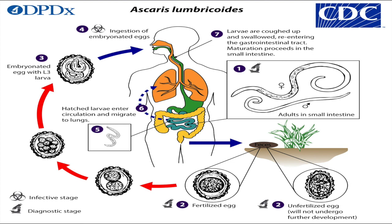This is the life cycle of Ascaris lumbricoides. Ascaris lumbricoides differs between sexes. The length of the male Ascaris is different from the female. The male is 15 to 20 centimeters, which is smaller than the female, which measures 20 to 35 centimeters.